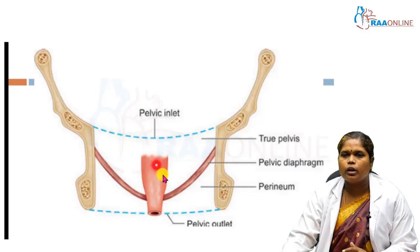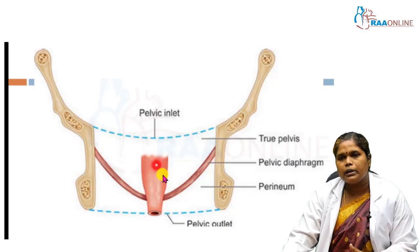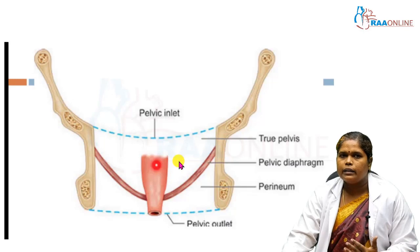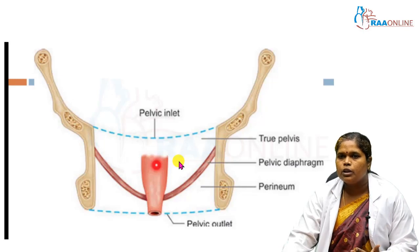The pelvic organs will be different in male and female. In the female, within the pelvis we have the urinary bladder and the main organ will be the uterus. Behind the uterus the next organ will be the rectum.